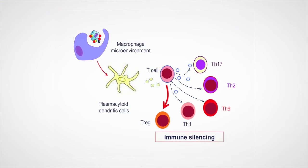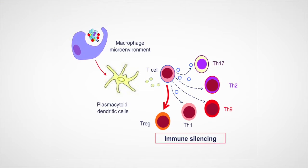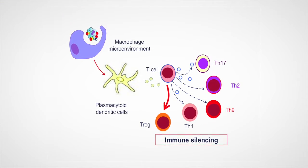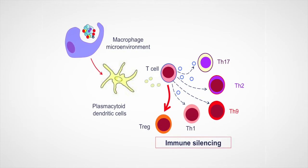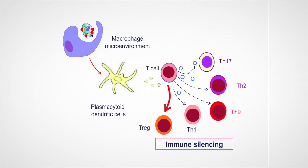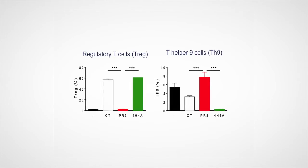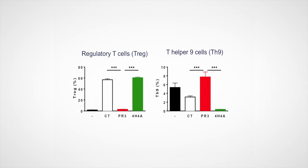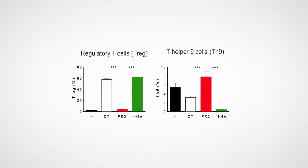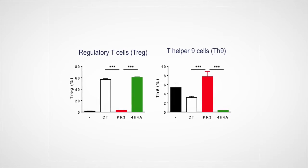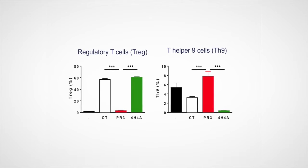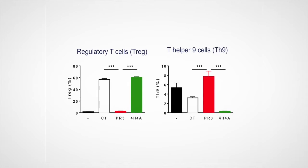Another cell type pivotal in immune silencing are plasmacytoid dendritic cells. These cells induce immune tolerance in response to the macrophage microenvironment created after the phagocytosis of apoptotic cells. Once reprogrammed, they lead to the generation of regulatory T cells. Intravenous injection of apoptotic cells expressing PR3 disrupted immune silencing by affecting plasmacytoid dendritic cells and their ability to generate regulatory T cells.